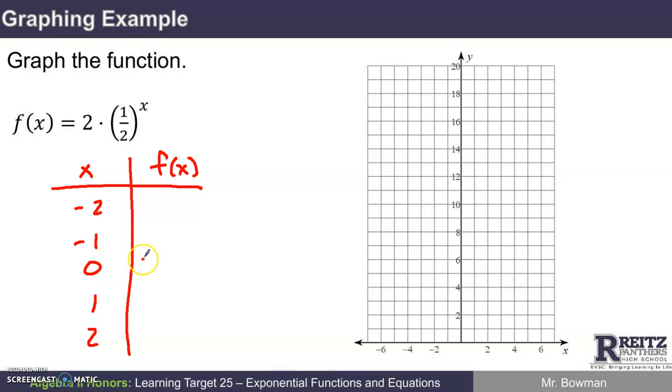When x is zero, two times one half to the zero power. One half to the zero power is one, but that still needs to be multiplied by two. This is two. When x is one, I've got two times a half, one half to the first power. That's one. Two times one half squared. One half squared is one fourth. So this is two fourths or one half.